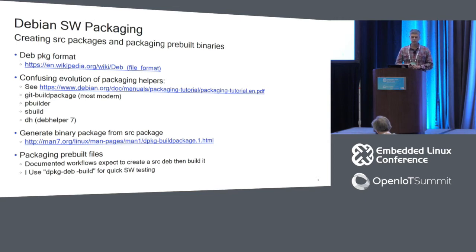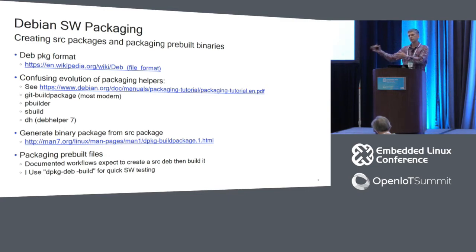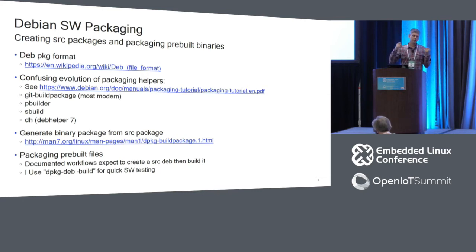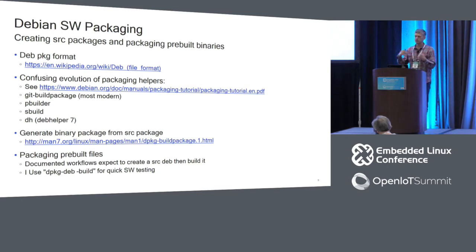Typically the Debian methodology is to create a source package, compile it, and generate a binary package for deployment. However, if you have pre-generated closed-source binaries to repackage, that's not a good fit for Debian's approach. A workaround is to create your own control file, install files into it, and run dpkg-deb build to package it up with the necessary dependencies — much cleaner than throwing a tarball into the system.